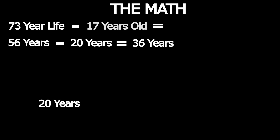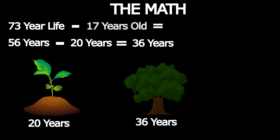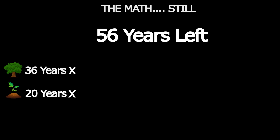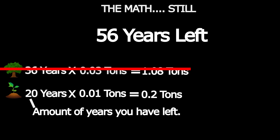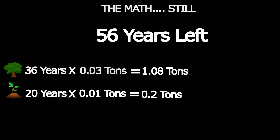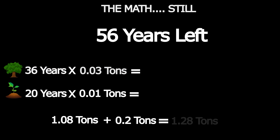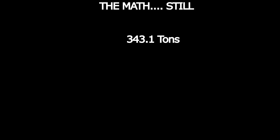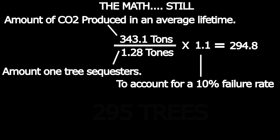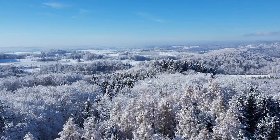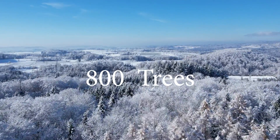Whatever years are left after subtracting 20 will be the years the tree sequesters 0.03 tons instead of 0.01. So going back to my example: I have 56 years left, and 36 of those years will be sequestering 0.03 tons. We use the equation (20 years × 0.01 tons) + (36 years × 0.03 tons) to find how much CO2 a single tree will sequester in my lifetime — that's 0.2 tons plus 1.08 tons, meaning a tree can sequester 1.28 tons in my lifetime. So 343.1 ÷ 1.28 × 1.1 = 294.8, meaning 295 trees would offset the average 17-year-old's CO2 emissions. But since I'm American, I should really be planting around 800 trees, since Americans produce around 14 tons of CO2 per year.